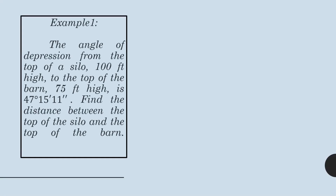Let's have an example. The angle of elevation from the top of a silo, which is 100 feet high, to the top of the barn, which is 75 feet high, is 47 degrees, 10 minutes, and 11 seconds. Find the distance between the top of the silo and the top of the barn. To properly solve and fully understand the problem, we have to illustrate it.